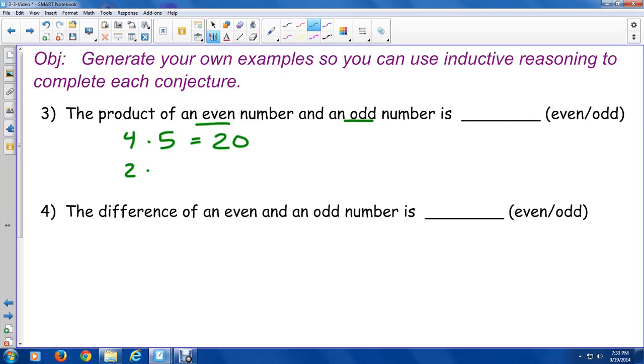That could totally be a coincidence and the next one could not work out. We don't know if it's always going to work out. Maybe we can't make a conjecture. So let's pick another even number. I'm picking 2. Pick another odd number. I'm picking 9. 2 times 9. I'm multiplying because it says product. And I get 18. Now I've got two cases where a product of an even number and odd number came out to be even. Can I make the conjecture that it's always going to be even? I like to say 3. 3 is a magic number. Let's do one more example.